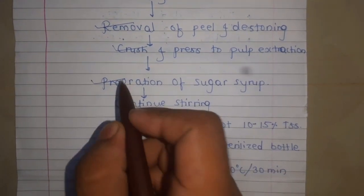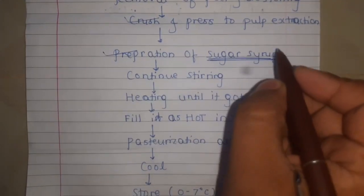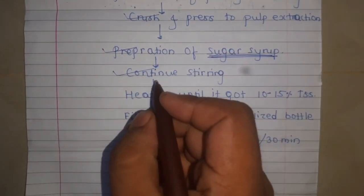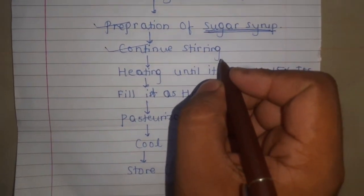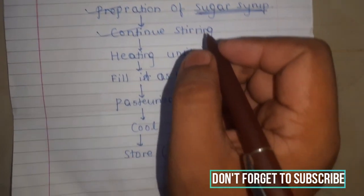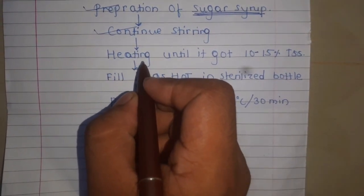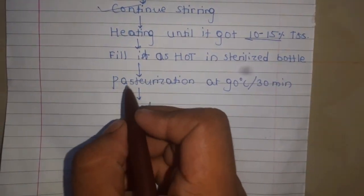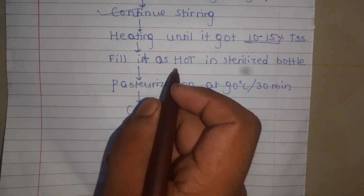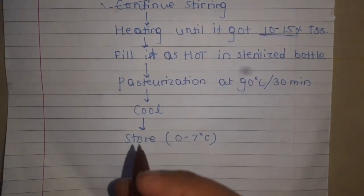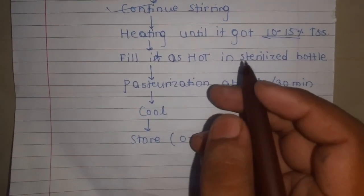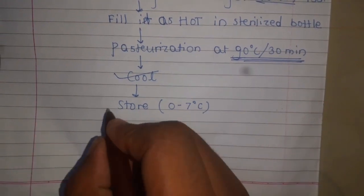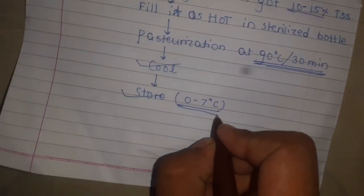Extraction of mango pulp is done by using a mechanical or handmade process. Prepare the sugar syrup as discussed earlier with continuous stirring. Add sodium benzoate at 600 ppm or sulfur dioxide at 350 ppm per litre into the fruit pulp. Continue stirring and heating until it reaches 10–15% TSS. Hot-fill into sterilized bottles at 90 degrees Celsius for 30 minutes. After that, cool and store at 0.7 degrees Celsius.